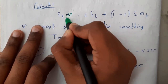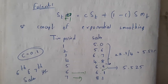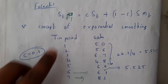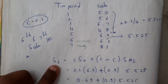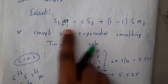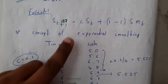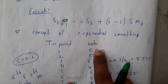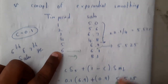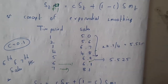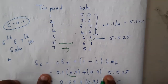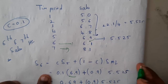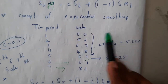To calculate for year 6, t becomes 5. We know c = 0.1, and S(t) — the sales at year 5 — is 6.9. Then (1 − c) = 0.9, and S_mt is the moving average of previous values. So S(6) = 0.1 × 6.9 + 0.9 × S_mt.